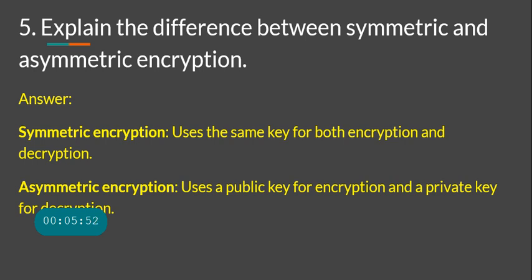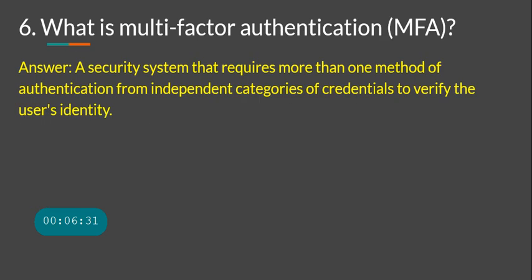A related trick question: what kind of encryption does HTTPS use — symmetric or asymmetric? HTTP runs on port 80 and is clear text; HTTPS runs on port 443, is secure, and uses TLS. The correct answer is that HTTPS uses both symmetric and asymmetric encryption together, so make sure you research how that works.